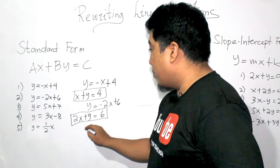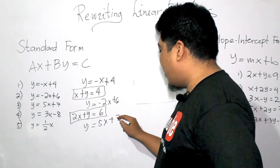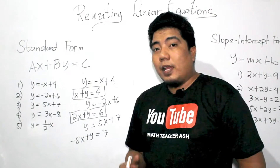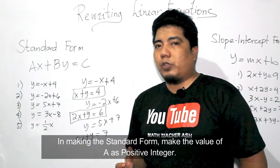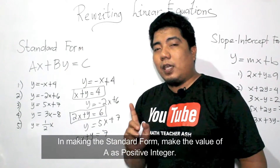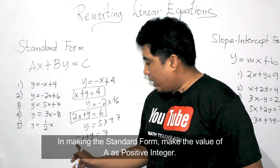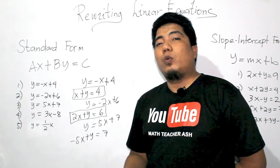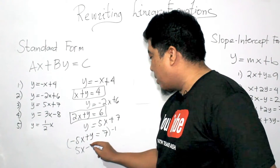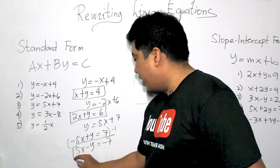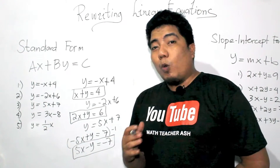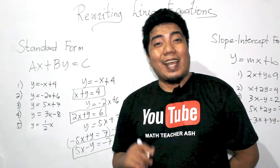For the third example, we have Y is equal to 5X plus 7. When you transpose, this becomes negative 5X plus Y is equal to positive 7. Now, in some books, A in the standard form must not be a negative value. Our A here is negative 5, so we multiply the whole equation by negative 1, giving us positive 5X minus Y is equal to negative 7. This multiplier of negative 1 only applies if and only if your A is negative.